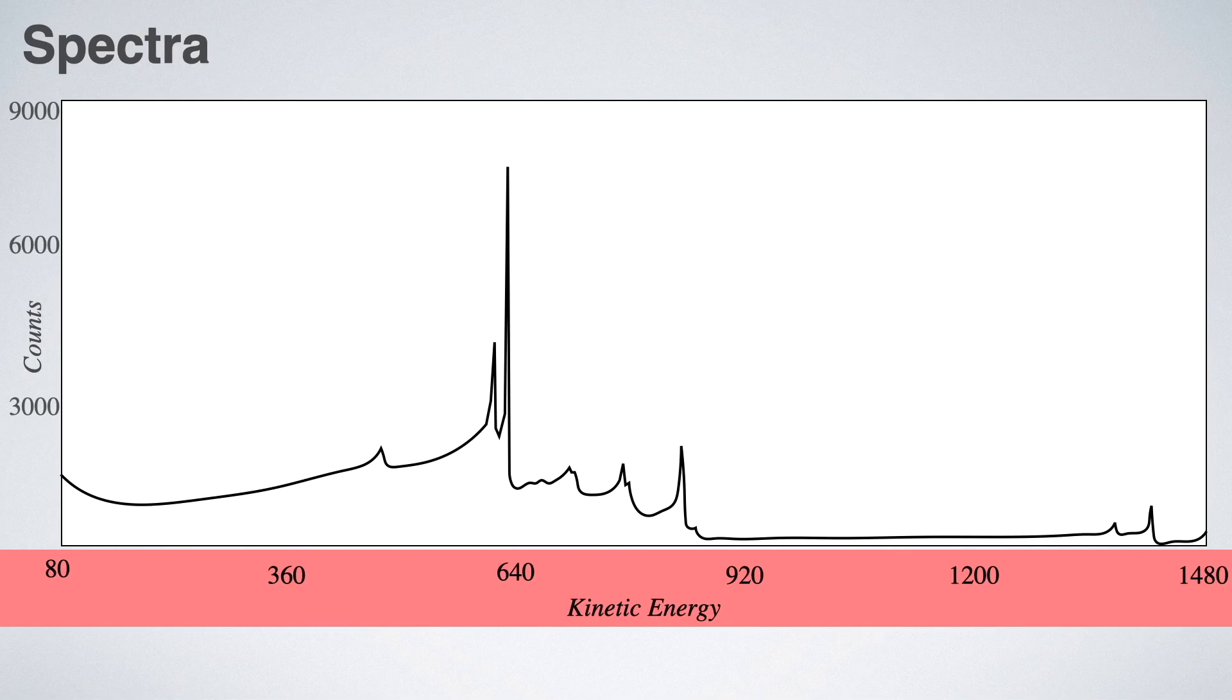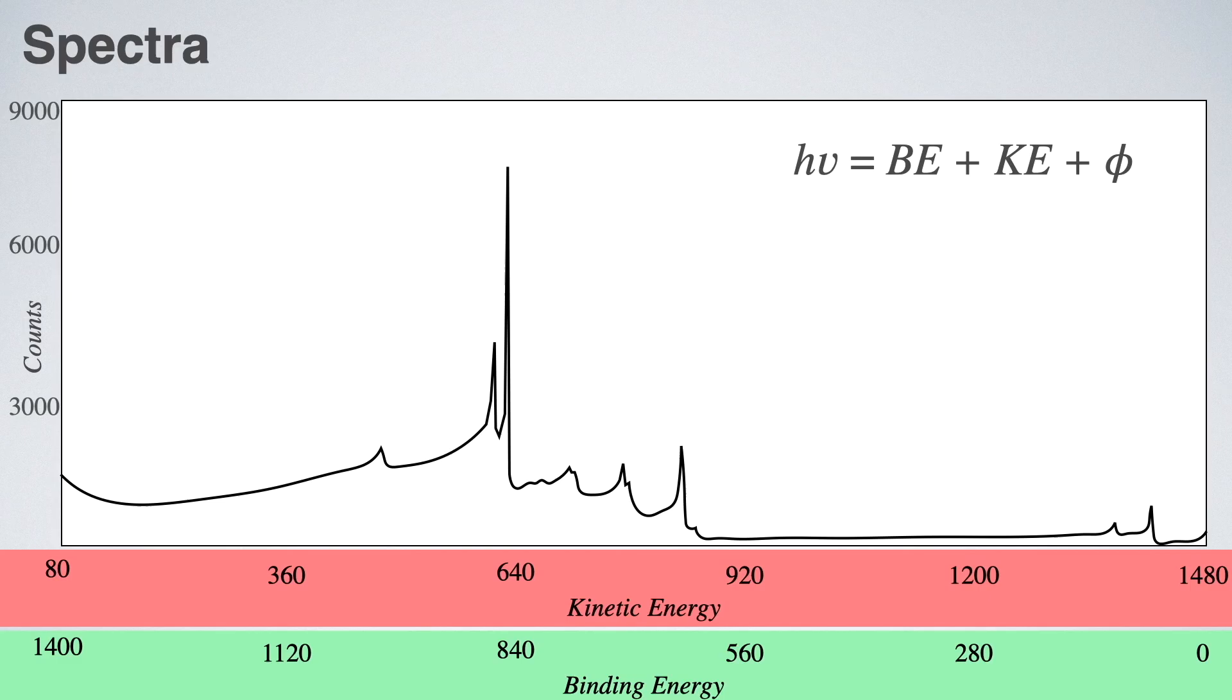But in most of the modern instruments, kinetic energy is converted to binding energy with the formula h nu equals binding energy plus kinetic energy plus phi. Therefore, the lower kinetic energy becomes higher binding energy and higher kinetic energy becomes lower binding energy. This means now X axis starts from higher binding energy and ends at lower binding energy. In future, we will always use binding energy for the reference. So graph will be always starting from higher binding energy to lower binding energy in X axis.